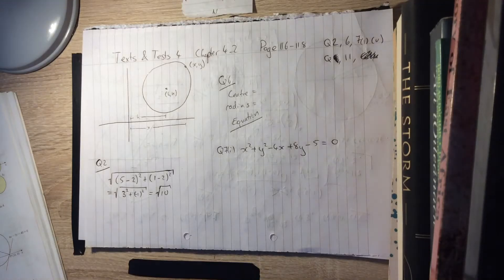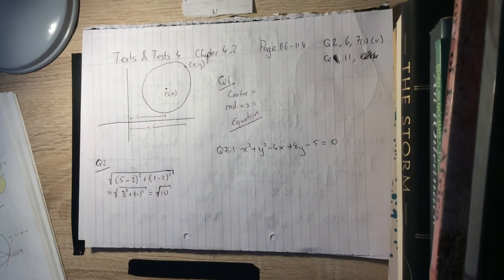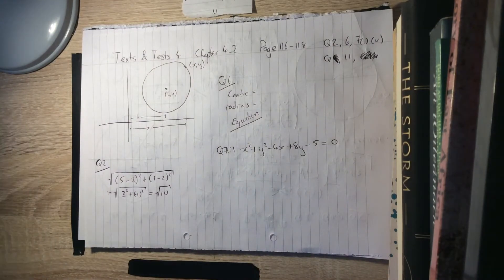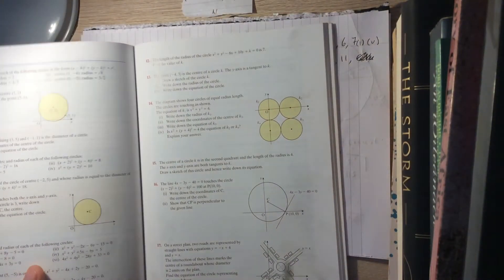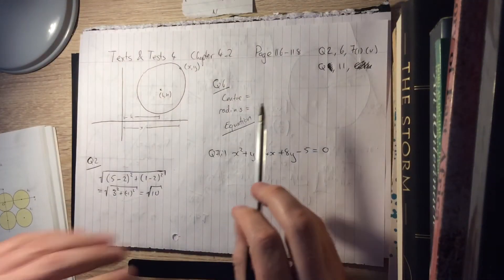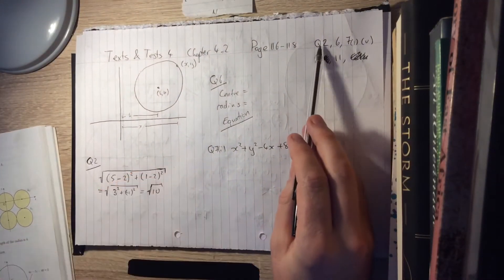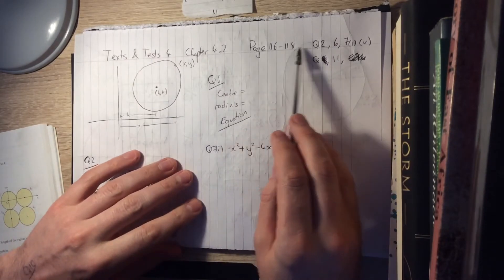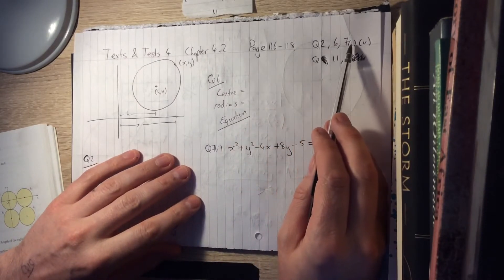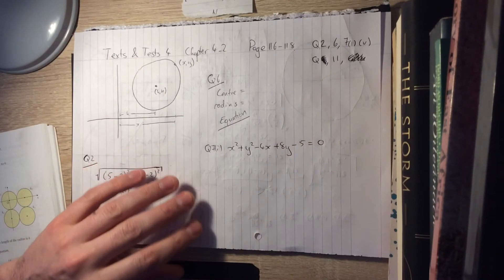How are you doing guys? Texts and tests 4 here, chapter 4.2. We're looking at page 116, 118. So these questions here from text and test 4. We're going to look at page 116, 118, questions 2, 6, 7, parts 1 and 5, and question 11.